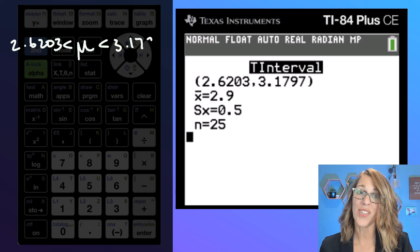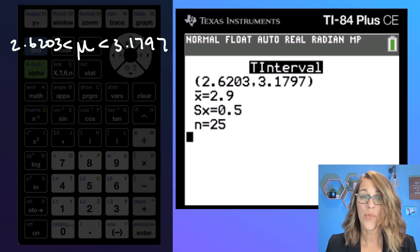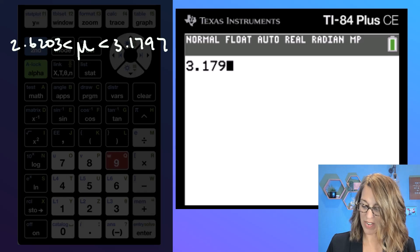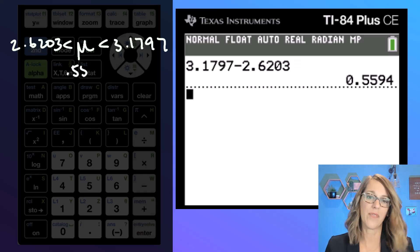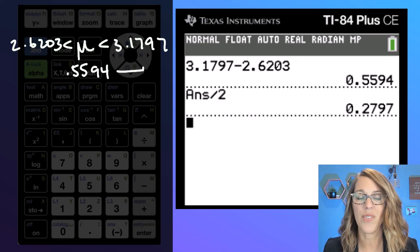I can also find that margin of error. We'll take the upper number, 3.1797, and subtract the lower number, 2.6203, hit enter for equals, and then divide by two.